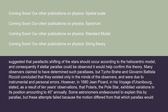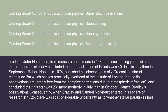However, in 1680, Jean Picard, in his Voyage d'Uraniborg, stated as a result of 10 years' observations that Polaris, the pole star, exhibited variations in its position amounting to 40 arcseconds annually. John Flamsteed, from measurements made in 1689 and succeeding years with his mural quadrant, similarly concluded that the declination of Polaris was 40 arcseconds less in July than in September. Robert Hooke, in 1674, published his observations of Gamma Draconis, a star of magnitude 2 which passes practically overhead at the latitude of London. Hence its observations are largely free from complex corrections due to atmospheric refraction, and he concluded that this star was 23 arcseconds more northerly in July than in October.